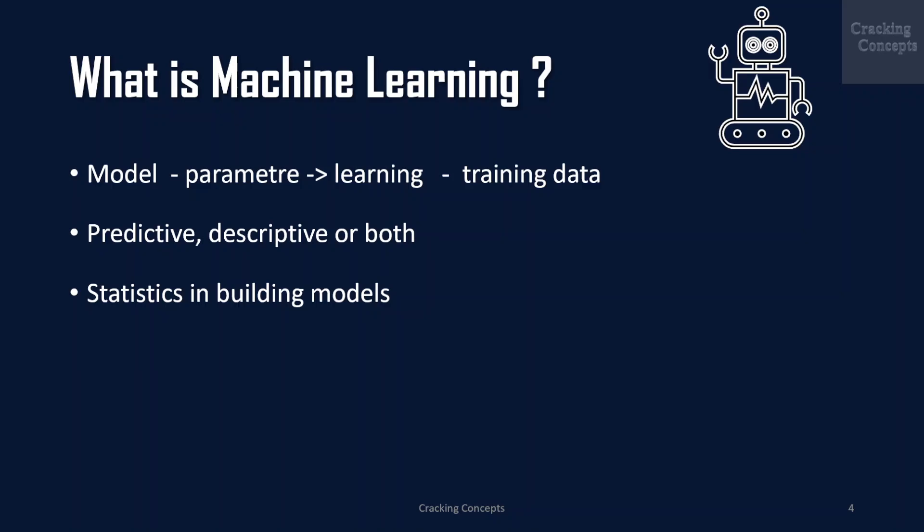Machine learning uses the theory of statistics in building mathematical models, because the core task is making inference from a sample.